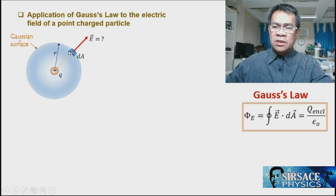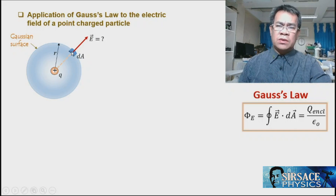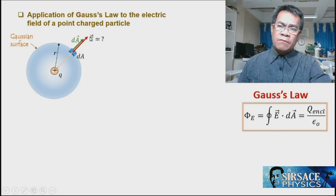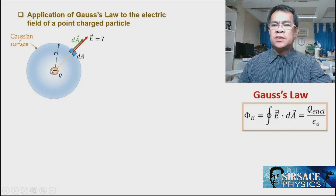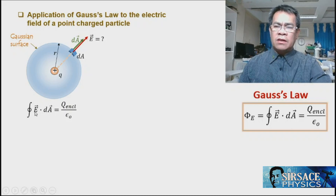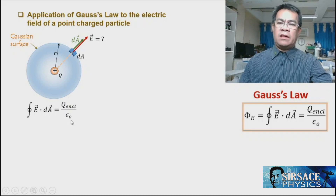We consider a very small infinitesimal area element; the normal to that area is the differential area vector. Note that the angle between the electric field and the normal area vector is zero because they are parallel — the charge is at the center of the sphere. Therefore, using the formula, the closed integral of E dot dA equals the enclosed charge divided by the permittivity of empty space.